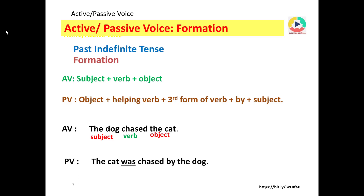In passive voice: the cat was chased by the dog. Note that in present indefinite tense the helping verbs are is, am, and are. In past indefinite tense, we use the helping verbs was and were — was for singular and were for plural cases. The verb is always in third form after the helping verb.